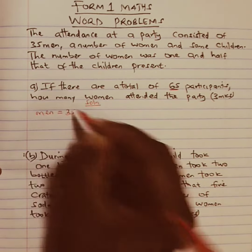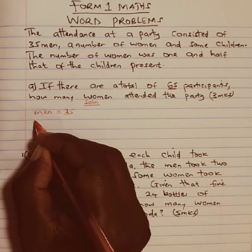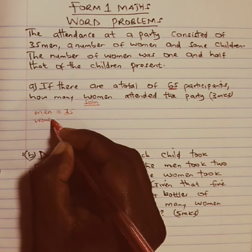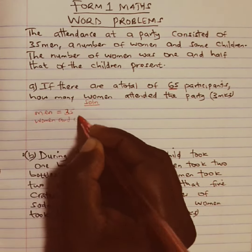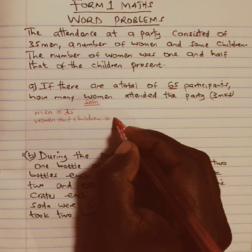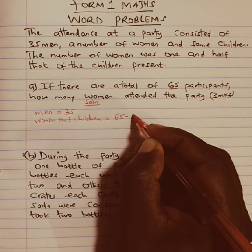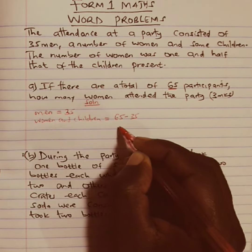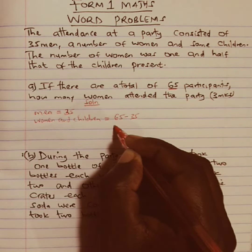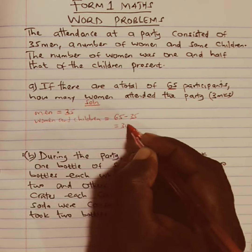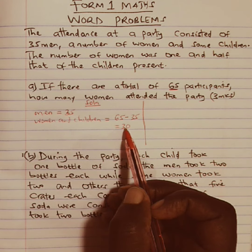The remaining from 65 will be women and children. To get the number that represents women and children, we take 65, which is the total, and subtract the number of men present. Whatever we get will represent both women and children, which gives us 30.